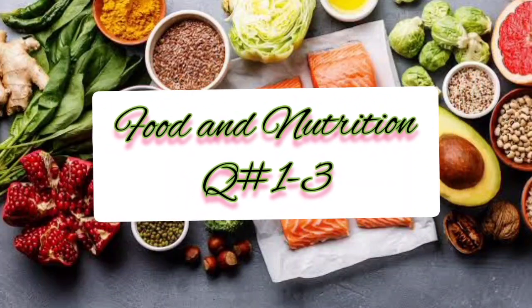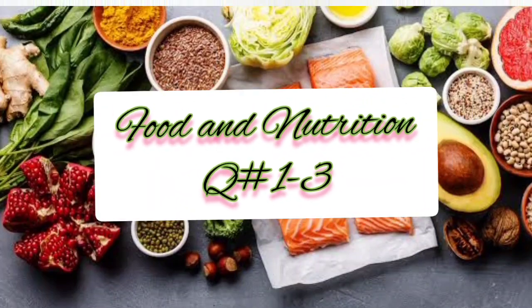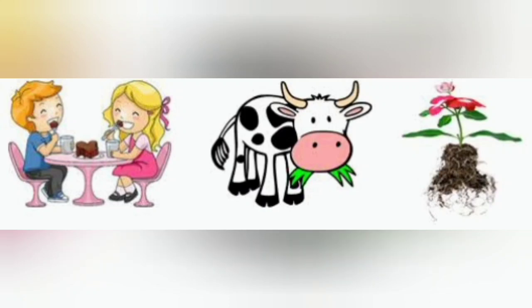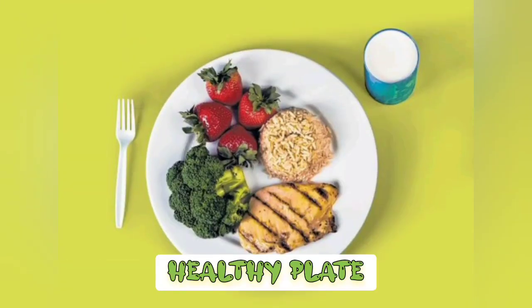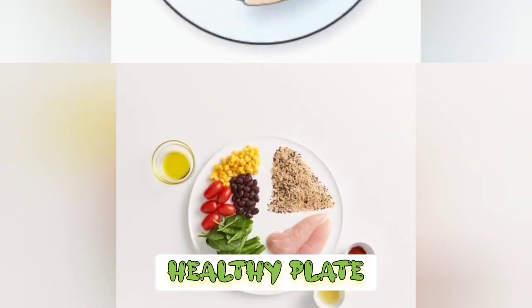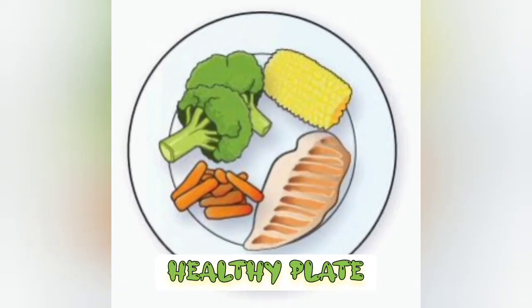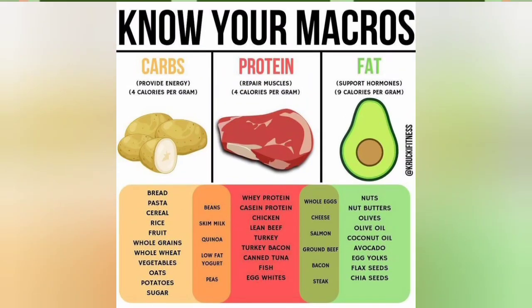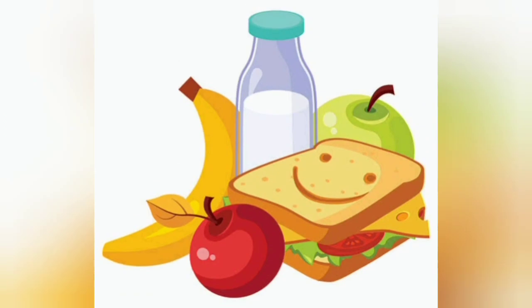Assalamu alaikum, very good morning Grade 5. In food and nutrition we will do exercise question number 1 and 3. All living things need food — except plants, because plants can make their own food by photosynthesis. So we need macronutrients. What are macronutrients which should be in a healthy plate? They are carbohydrates, proteins, and fats.